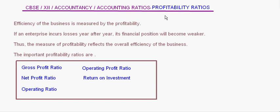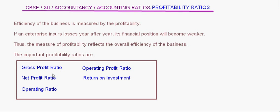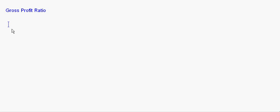These profitability ratios are very important from the point of view of accounting ratios, and we can judge the position of the company on the basis of the profitability ratios. The important profitability ratios are gross profit ratio, net profit ratio, operating ratio, operating profit ratio, and return on investment. Today we will be taking up the gross profit ratio, which is a very important measure of profitability.